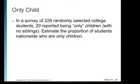Now we're going to look at another example, one about being an only child. In a survey of 226 randomly selected college students, 20 reported being only children, children with no siblings, estimate the proportion of students nationwide who are only children. So we can figure out our P hat here and then create our confidence interval around it.